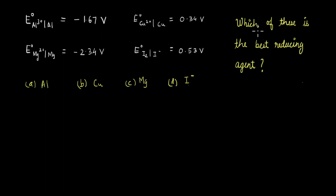In this question, we are asked to identify which is the best reducing agent from the given options. The data provided are the standard reduction potentials of aluminium, magnesium, copper, and iodine.